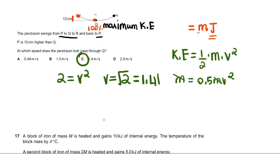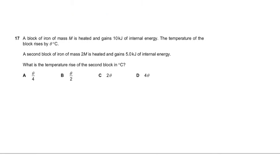Now we move on to the last and final question. The question here says a block of iron mass M is heated and gains 10 kilojoules of internal energy. Now internal energy is the total energy of all the atoms inside. It basically takes into consideration the total kinetic energy and potential energy of all these little vibrating particles.